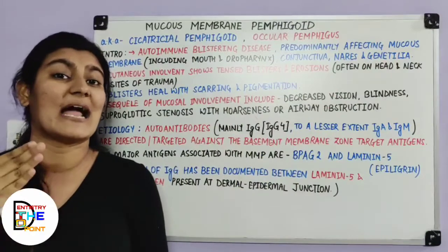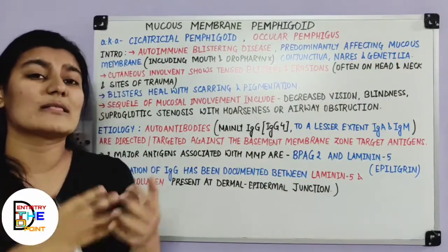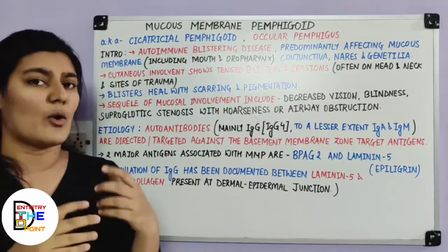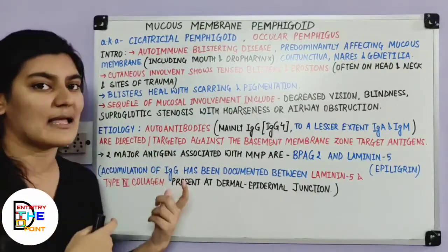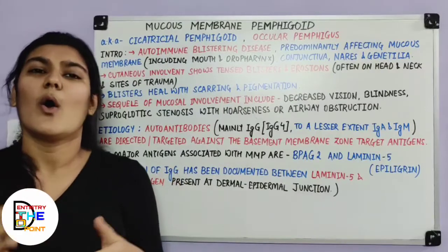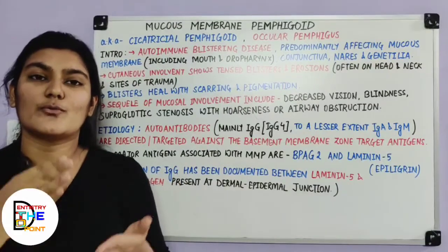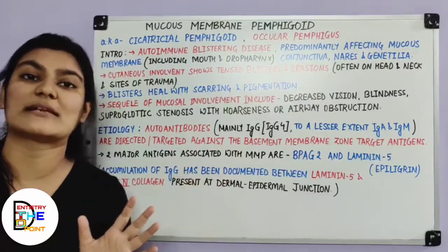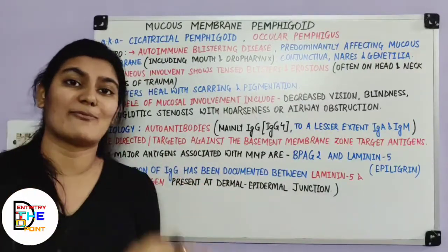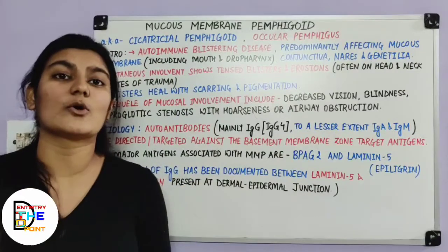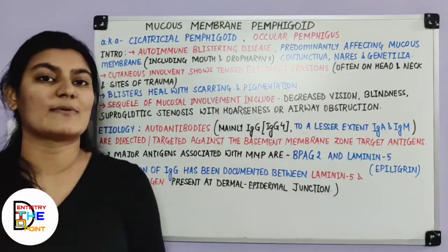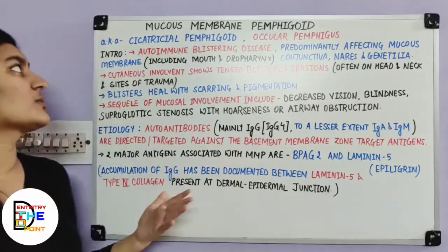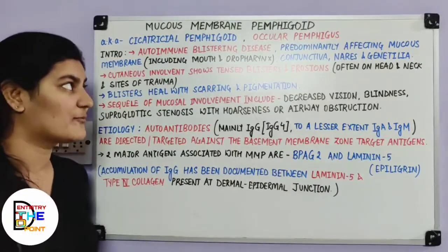I would highly request you to watch that video first because these both are types of pemphigoids, so many things are similar. I would also request you to first watch pemphigus, because this is all a family of autoimmune blistering diseases. Watch pemphigus first, then bullous pemphigoid, and then mucous membrane pemphigoid for a better understanding. So now let's get into the video — mucous membrane pemphigoid.